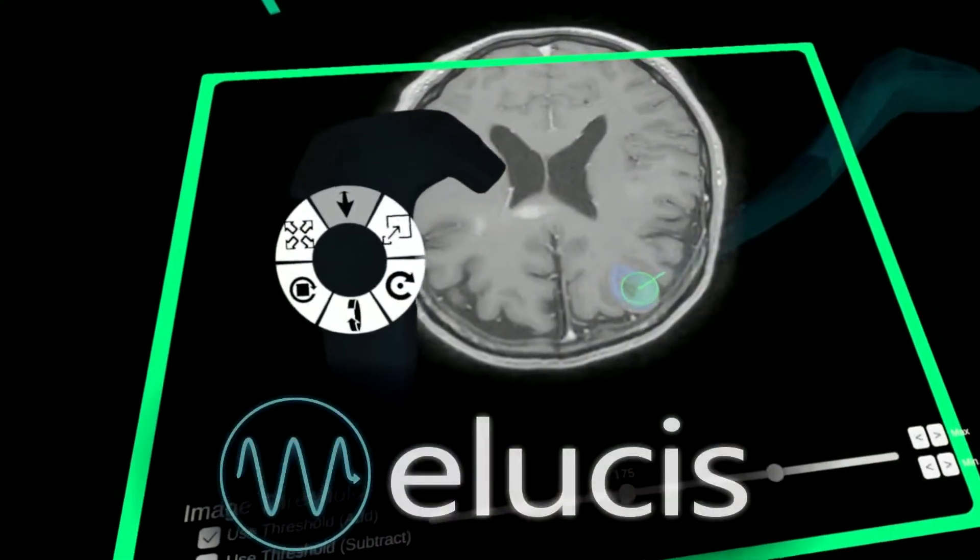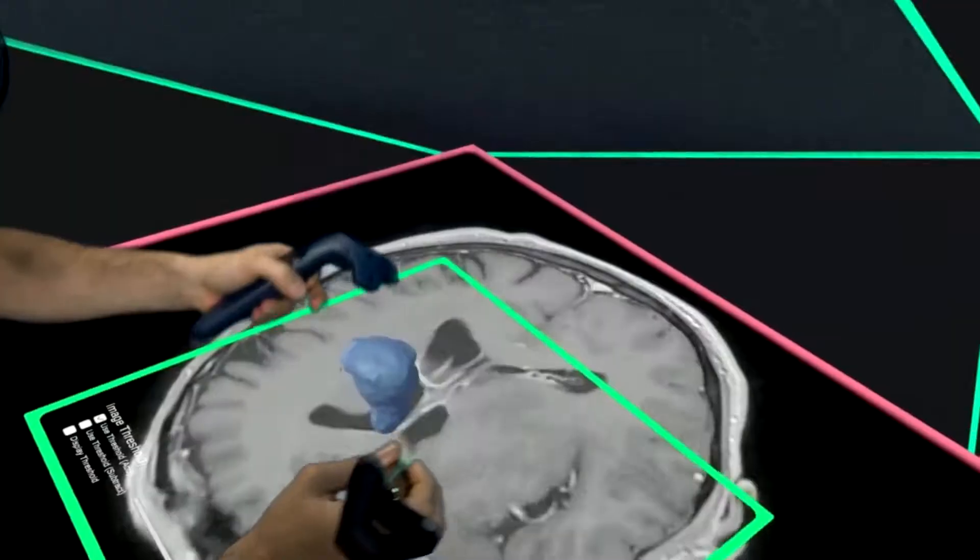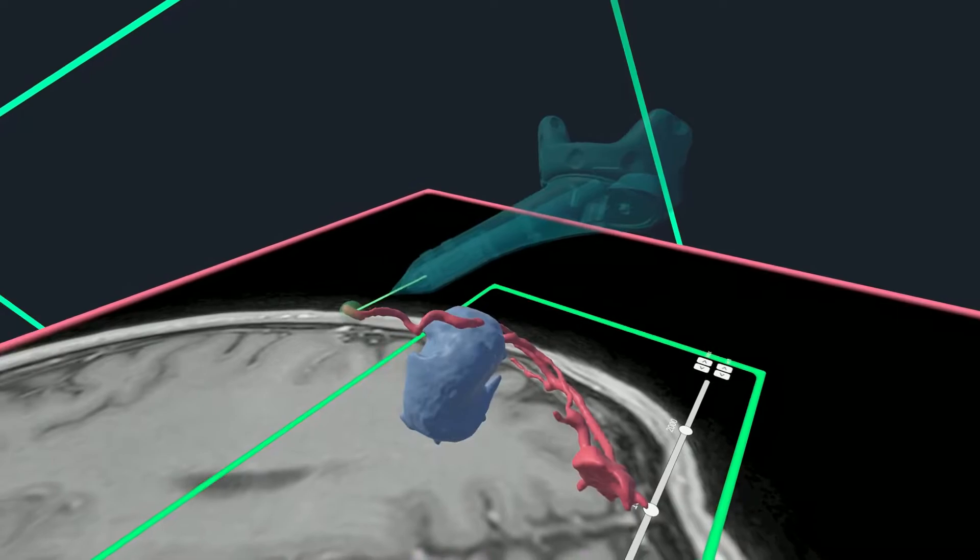Introducing Eleusis, the fastest and easiest way to create accurate and detailed 3D anatomical models directly from medical images.